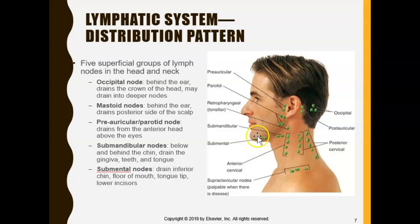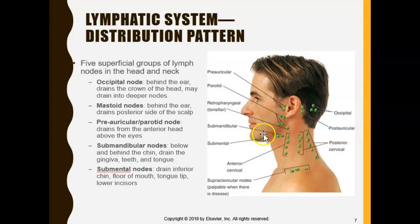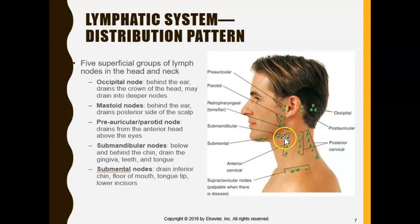Lastly, the submental node is underneath your chin. Vessels in that region pass through this checkpoint, and it drains the inferior portion of the tongue — the floor of the mouth, the tip of the tongue, and notably the lower incisors. The front bottom teeth drain here. Most other teeth drain at the submandibular node, but the lower incisors drain at the submental.